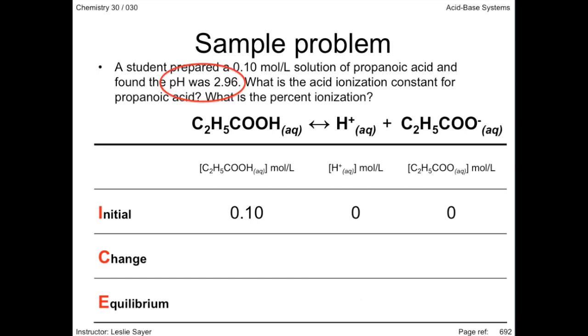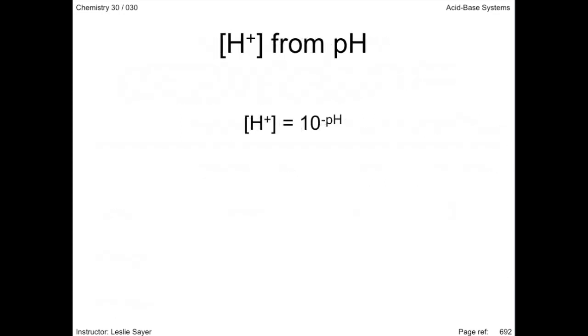The pH tells us the concentration of the hydrogen ions at equilibrium. Recall your Chemistry 20 when you had to calculate pH from hydrogen ion concentrations. If you need reminding of this, review Chapter 6 in your textbook.